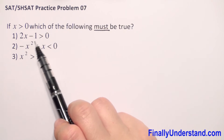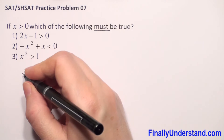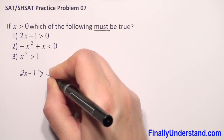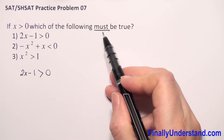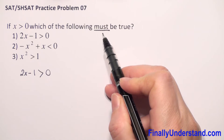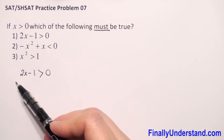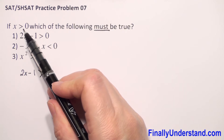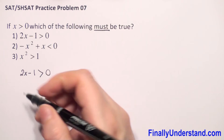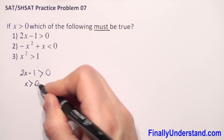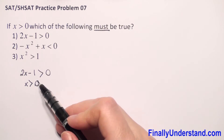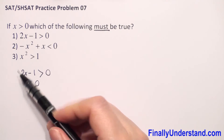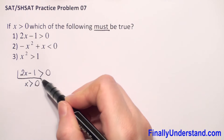Let's start from the first inequality. We have 2x minus 1 is greater than 0. Because we have the word 'must,' it means this inequality must be true for all x greater than 0. It will be enough if we find one example for which this inequality is not true.